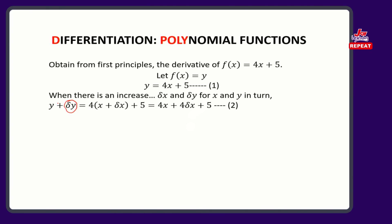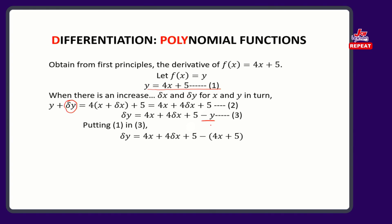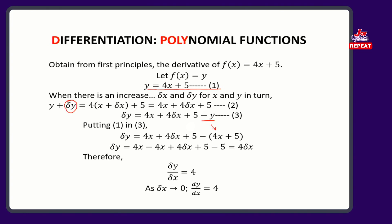Let's make delta y the subject. Delta y becomes 4x plus 4 delta x plus 5 minus y. We have minus y, and we can see y equals 4x plus 5 from equation 1. So we substitute: 4x minus 4x is 0, plus 4 delta x, and 5 minus 5 is 0. So it's equal to 4 delta x. If we divide both sides by delta x, we'll have delta y on delta x equals 4. So as delta x gets to 0, dy/dx equals 4.